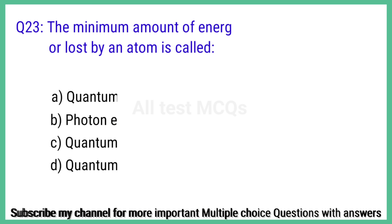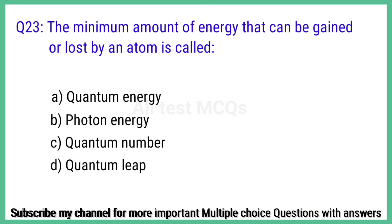Question number 23. The minimum amount of energy that can be gained or lost by an atom is called? The right answer is option D: Quantum.